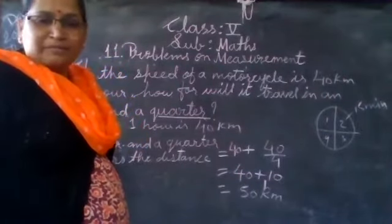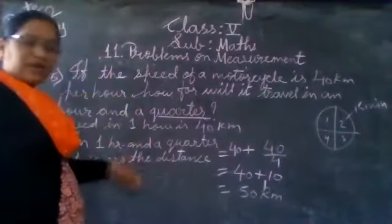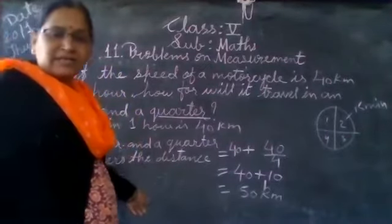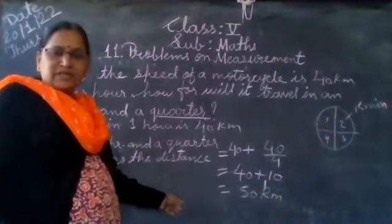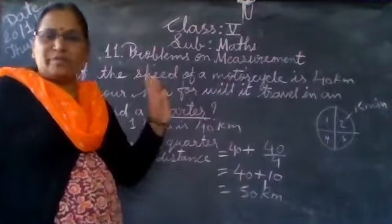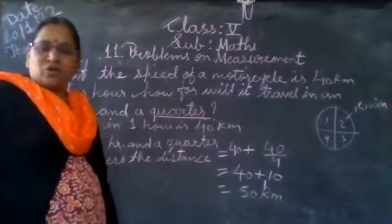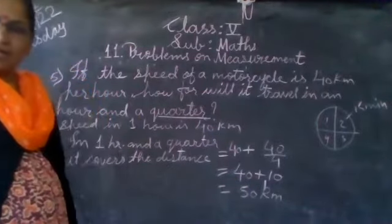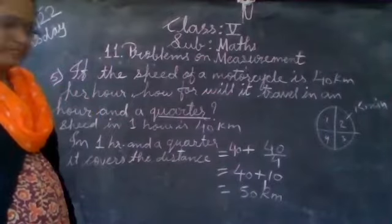So in 1 and a quarter hours, the motorcycle covers a distance of 50 kilometres. Write the answer: the motorcycle covers a distance of 50 kilometres in 1 and a quarter hours. Got it, children?